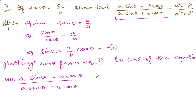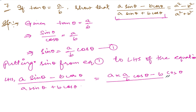Since sin θ equals (a/b) cos θ, substituting in the numerator: a times (a/b) cos θ minus b cos θ. And in the denominator: a times (a/b) cos θ plus b cos θ.